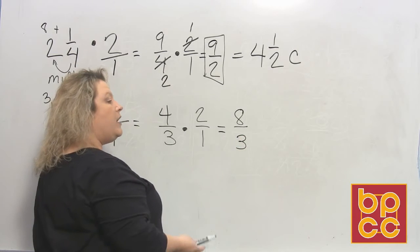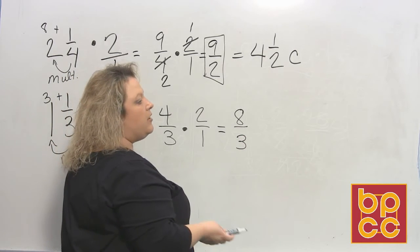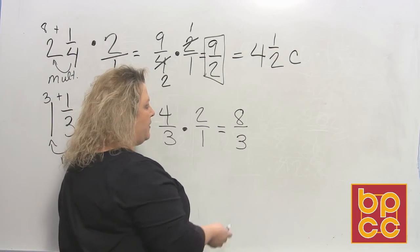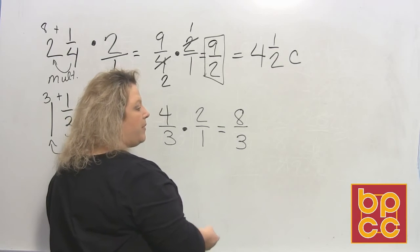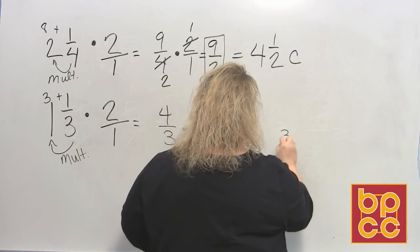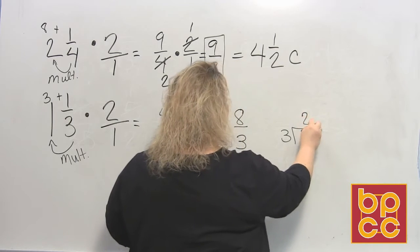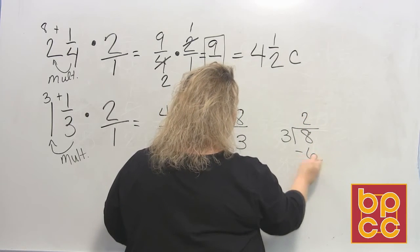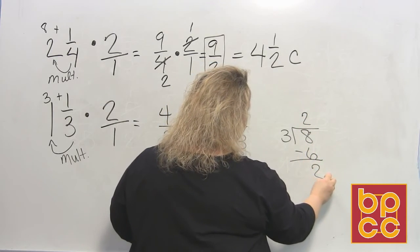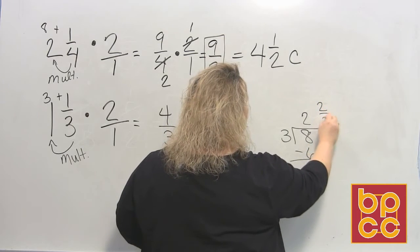And since we are doing cups of peanut butter, you don't measure 8/3 cups of peanut butter. So you want to make sure you turn that back into a mixed number. So 3 divides into 8 two times, which makes 6. I subtract and that gives me 2. So that's 2 and 2/3.